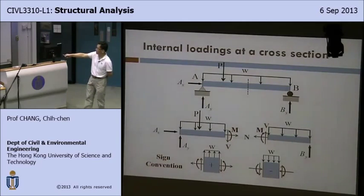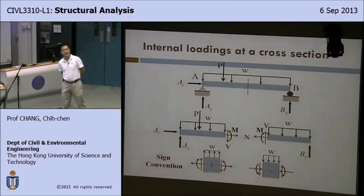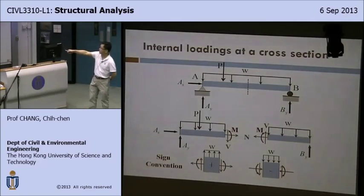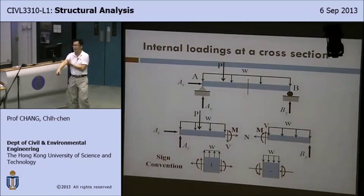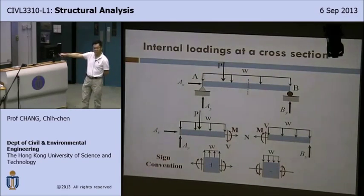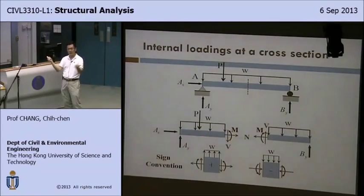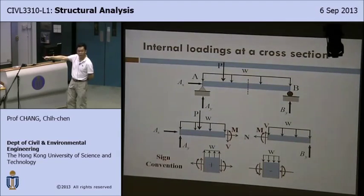Coming back to sign conventions — there are three internal forces: axial force, shear force, and bending moments. These forces are due to the external force, so all of them must be defined properly with positive and negative directions. The distributed force W is defined as positive upward. Axial force is positive when you see pulling or extension of the components. For shear force, if you're looking at the left-hand side of the element, upward is positive shear force.